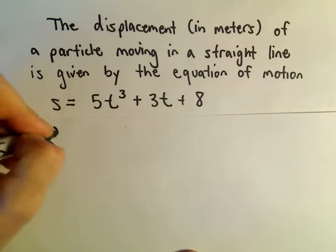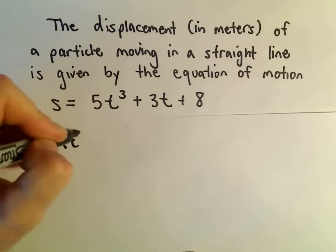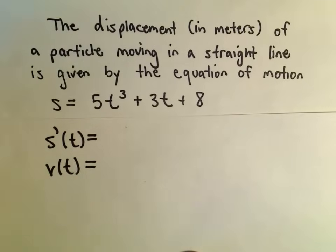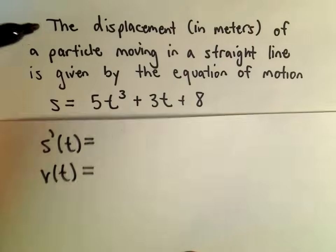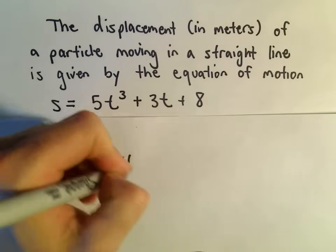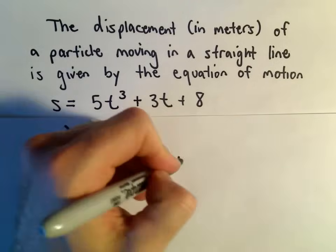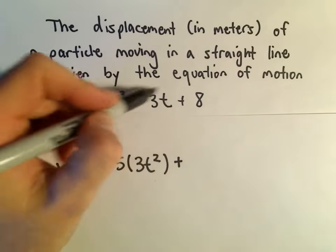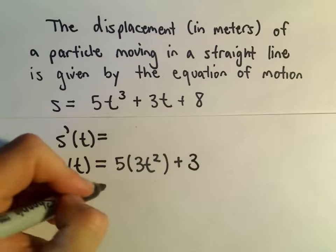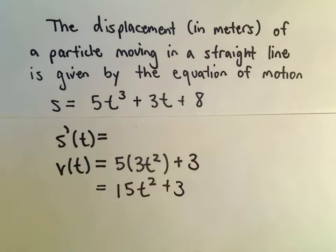So, the derivative of our position function, and we can even stick a T in there if we want to. Well, that's going to be the same thing as our velocity equation. Well, if we take the derivative of 5T cubed, the exponent would come down front, so we would have 5 times 3T squared. The constant just kind of comes along. The derivative of 3T is simply 3, and the derivative of positive 8 is 0. So we'll get 15T squared plus 3.